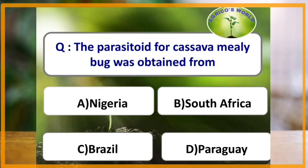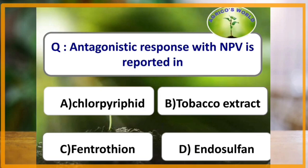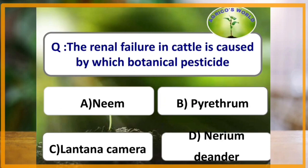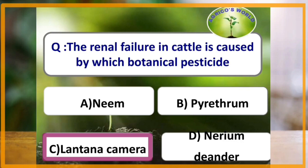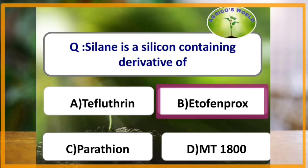The parasitoid for cassava mealybug was obtained from Paraguay. Which one of the following is the toxin produced by Metarhizium anisopliae? Alpha toxin and destruxin both are toxins produced by Metarhizium anisopliae. Antagonistic response with Nuclear Polyhedrosis Virus is reported in endosulfan. The renal failure in cattle is caused by Lantana camara. Integrated pest management term was coined by the Council of Environmental Quality. Selene is a silicon-containing derivative of Ethofenprox.